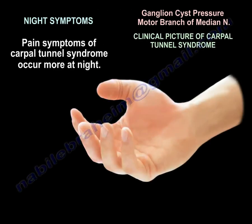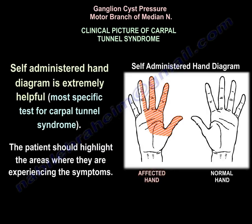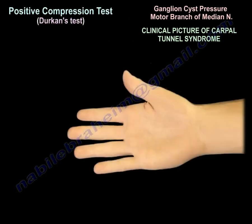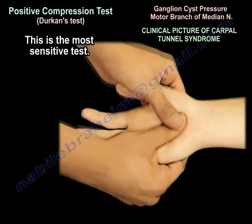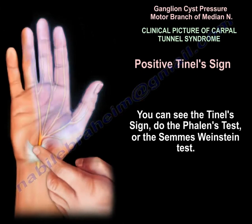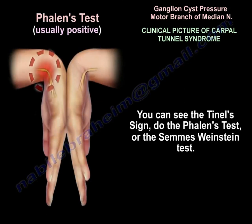Carpal tunnel syndrome is a clinical diagnosis. The patient will have night pain, and the self-administered hand diagram, which is the most specific test for carpal tunnel, will show the area of involvement as seen in this diagram. You may have thenar atrophy, the compression test will probably be positive, you can see the Tinel sign, you can do the Phalen test, or the Semmes-Weinstein 10-gram test.